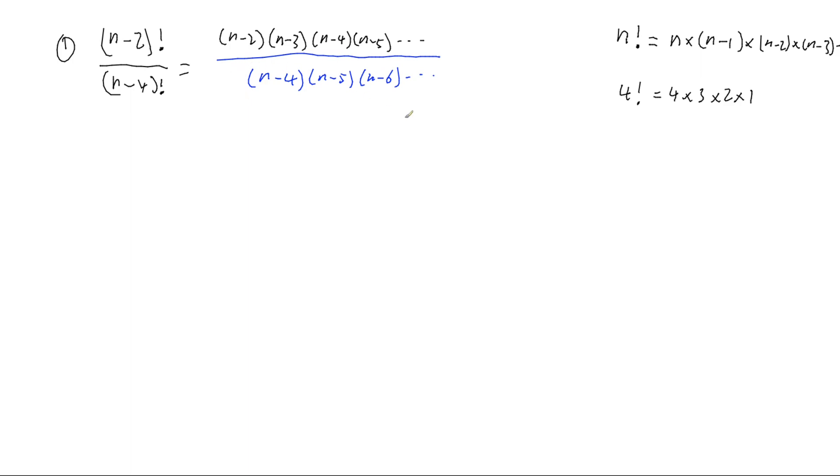Where writing it out using this notation helps us is that I now have an n-4 on the top and an n-4 on the bottom, so I can cancel out these two terms because n-4 will be the same number as n-4, and therefore they divide to 1. The n-5 will cancel, the n-6 will cancel, and we'll just keep canceling down until we reach 1.